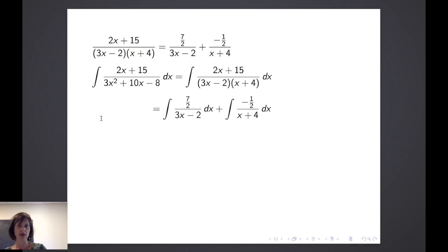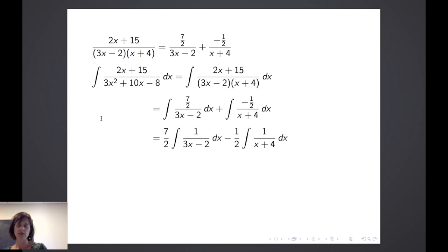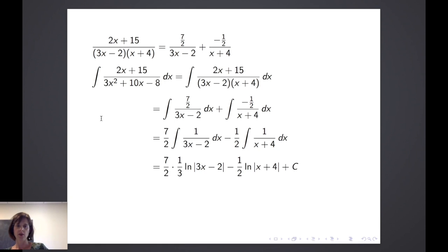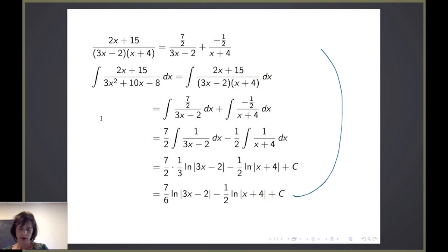Now I'll return to my integral and note that (2x + 15) over (3x − 2)(x + 4) is now (7/2) over (3x − 2) plus (−1/2) over (x + 4). So I can rewrite my integral as such. Now to integrate, I can pull those constants out in front. I have linear factors in the denominator of each integrand, so each is just a form of the natural log. Using a u-substitution if needed, the integral becomes (7/2)(1/3)ln|3x − 2| minus (1/2)ln|x + 4| plus C. You could take the derivative and verify you get back to (2x + 15) over (3x² + 10x − 8).